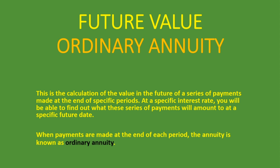So that is what ordinary annuity basically means — payments made at the end of each period. We also looked at another lesson where payments are made at the beginning of the period, and that is known as annuity due. If you'd like to check that one out, you can click the link at the top right of the screen, or you'll find the link in the description below. So let's get into it.